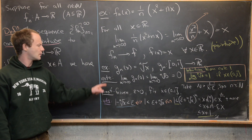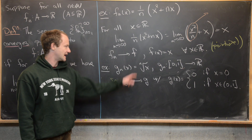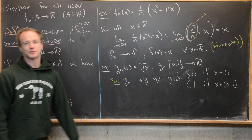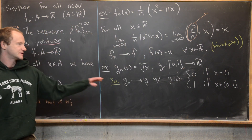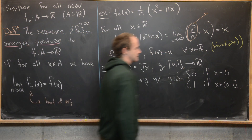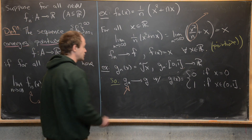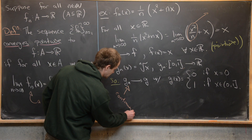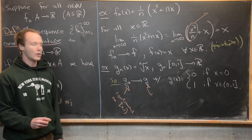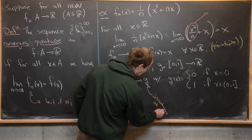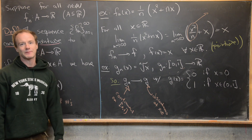As a quick summary of this second example: g_n(x) = x^(1/n) converges pointwise to the function g, which has the piecewise definition g(x) = 0 if x = 0 and g(x) = 1 if x ∈ (0, 1]. This is the first hint that something weird happens with sequences of functions — each g_n is continuous on [0, 1], but the pointwise limit is discontinuous at x = 0. So a sequence of continuous functions can converge to a discontinuous function.